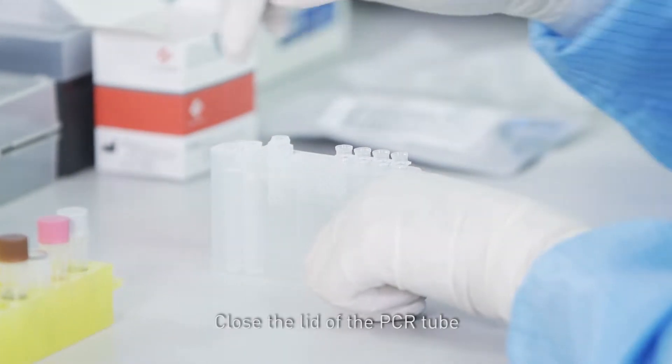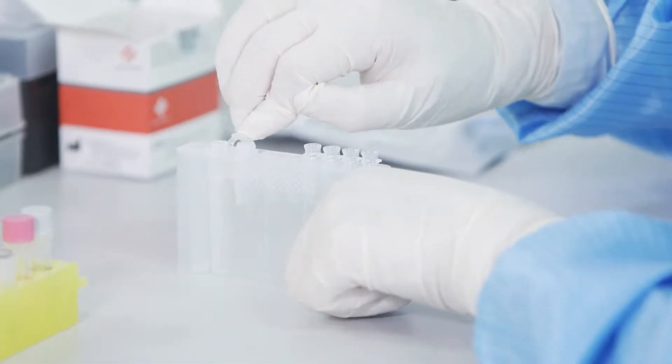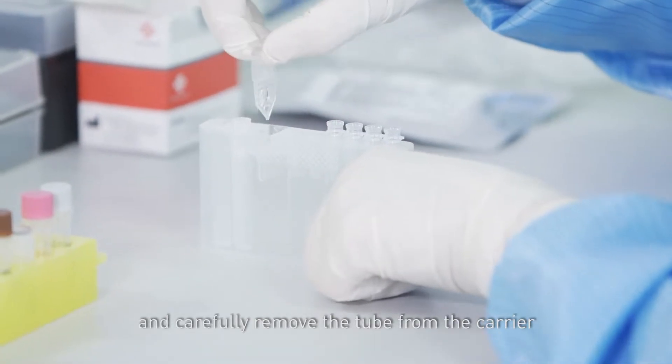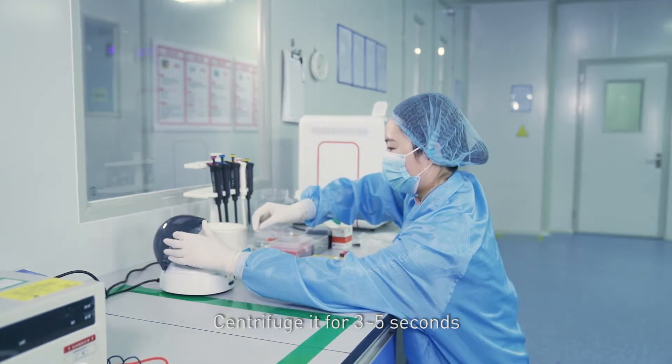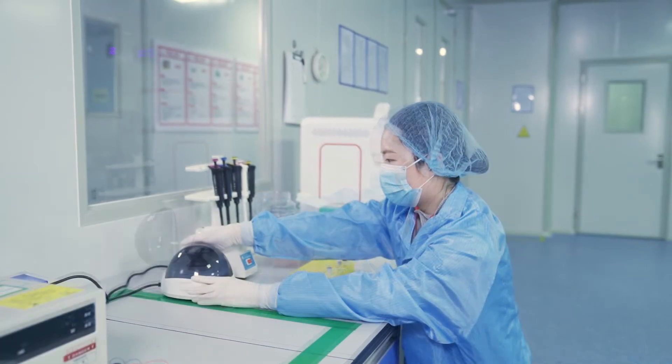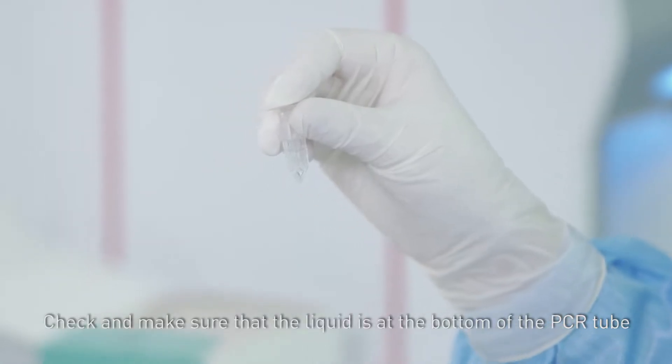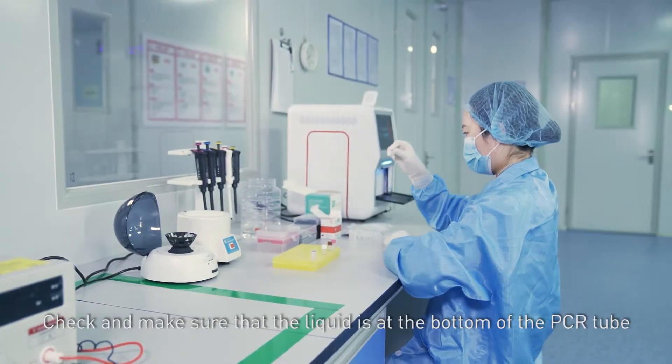Close the lid of the PCR tube and carefully remove the tube from the carrier. Centrifuge it for 3 to 5 seconds. Check and make sure that the liquid is at the bottom of the PCR tube.